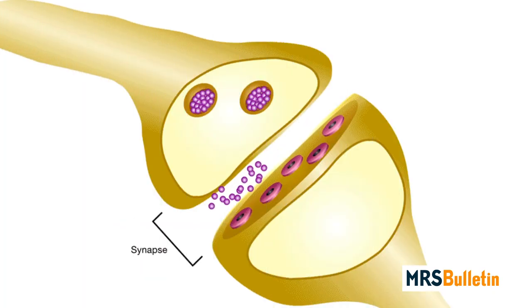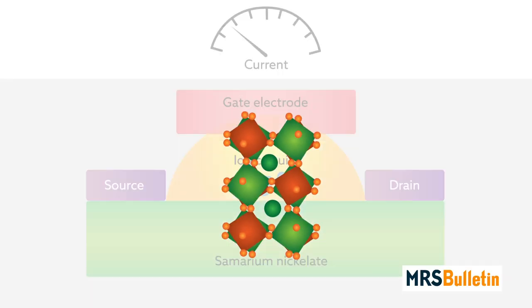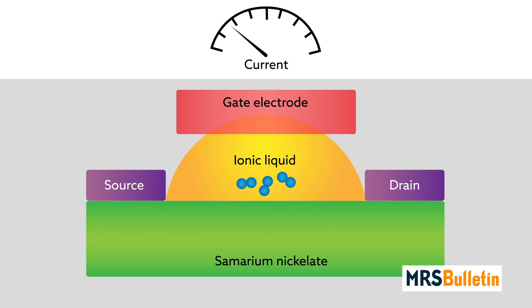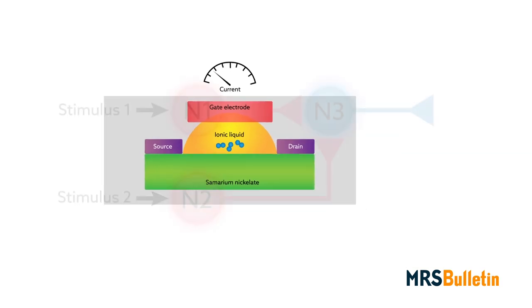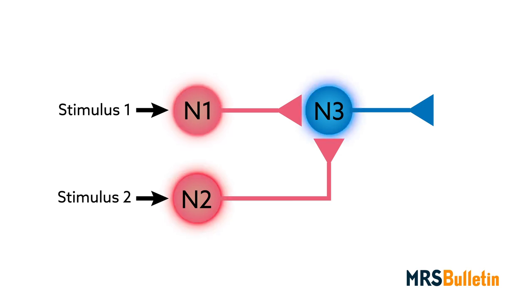Quantum materials can also reproduce the gatekeeping function of the synapses that connect neurons. Samarium nickelate is a good example. Experiments have shown that when embedded in a transistor-like structure, samarium nickelate can be made more or less conductive, depending on how much oxygen is introduced into or removed from its crystal structure. When linked together in an electronic circuit, elements containing this tunable material can dictate how strongly or weakly artificial neurons are correlated under an external stimulus.